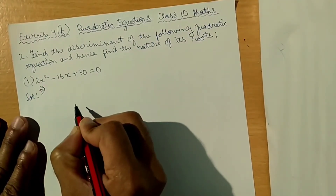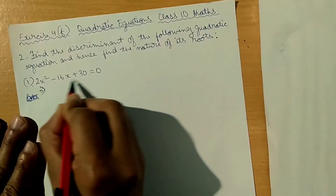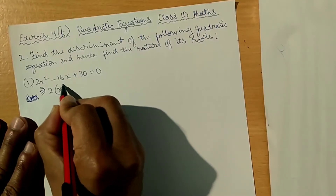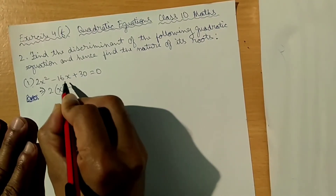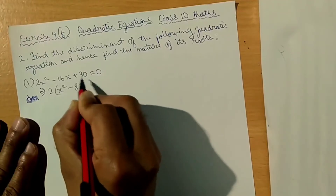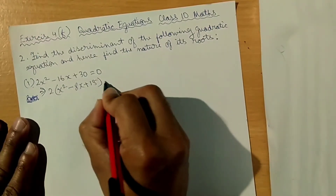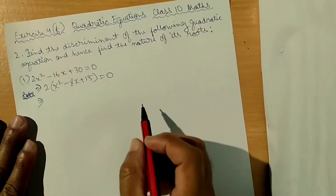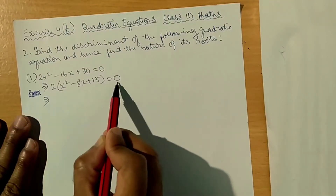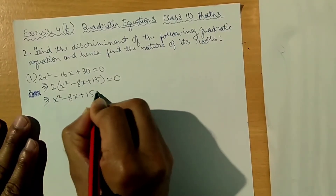Now, this implies we can simplify the equation. Since 2x² is the leading term, this 2 cannot be equal to 0, so we divide through by 2. This implies x² minus 8x plus 15 equal to 0.